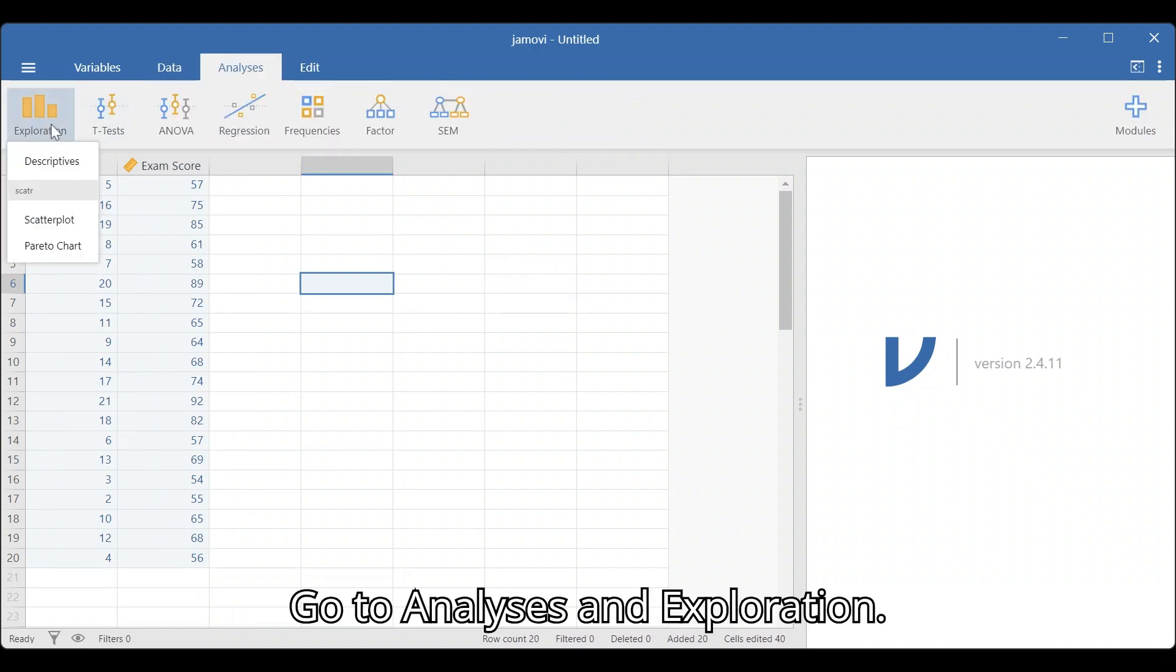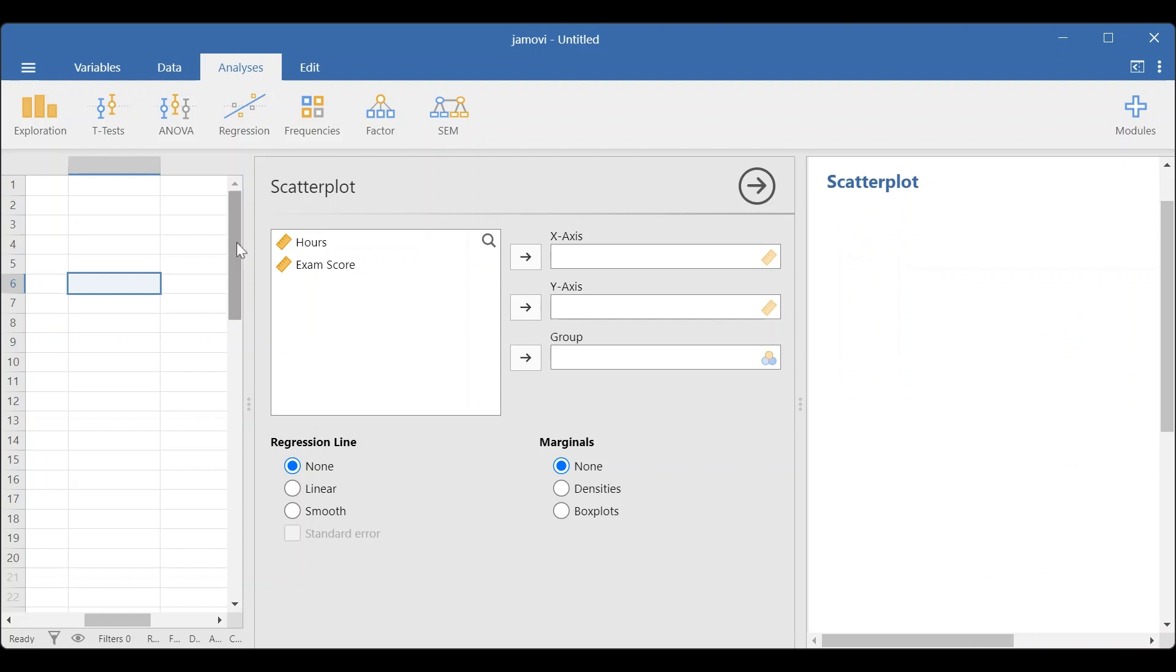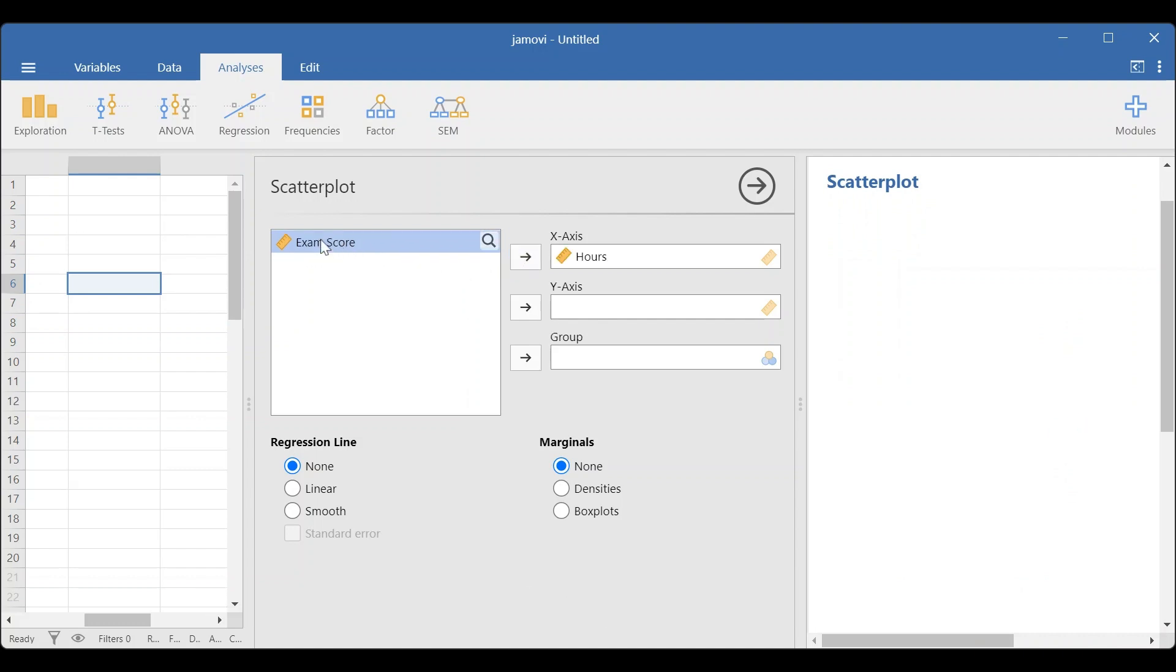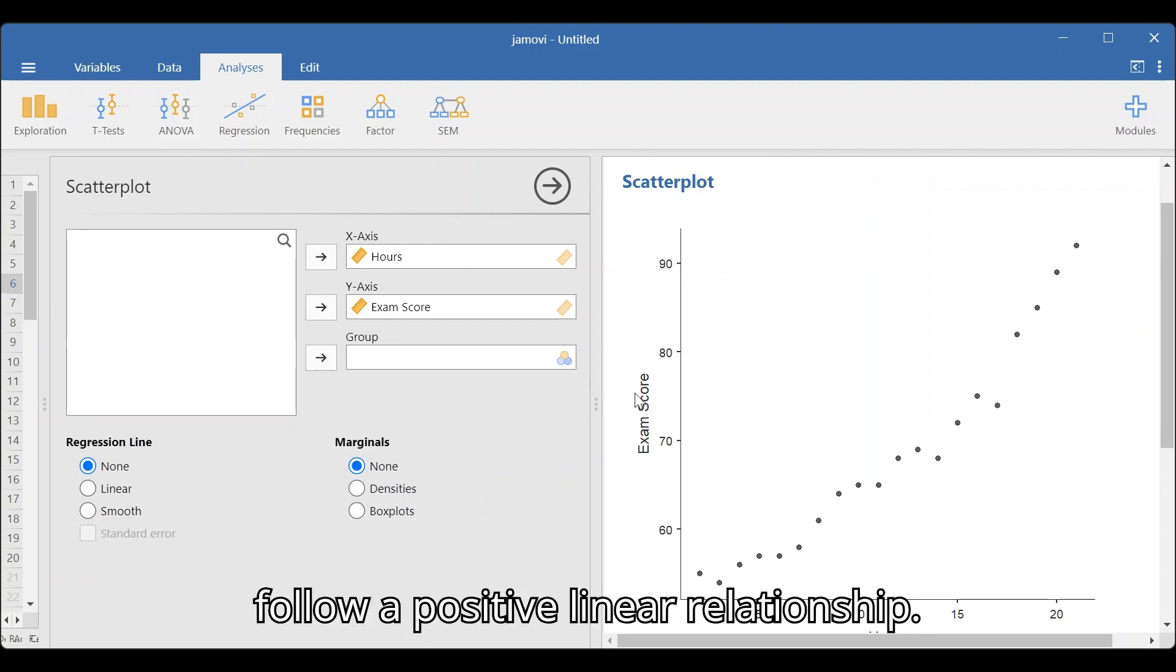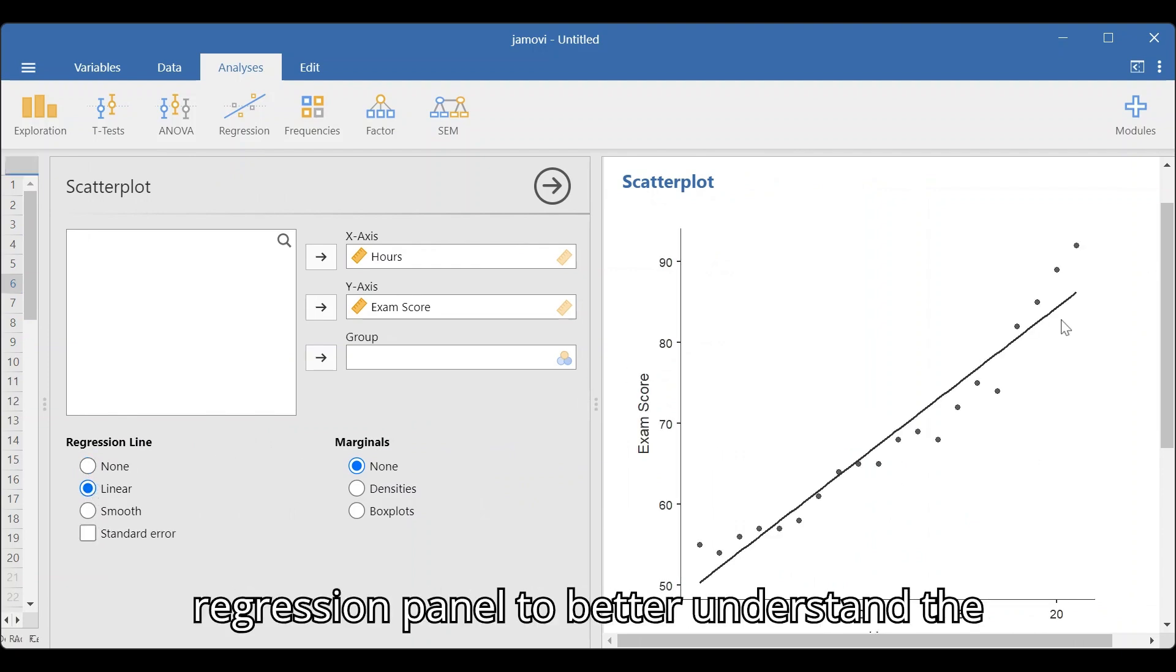Go to Analyses and Exploration. Select Scatterplot and wait for the option window. Move the independent variable in the x-axis, and the dependent variable in the y-axis. It can be seen in the scatterplot on the right that the two variables seem to follow a positive linear relationship. You can select the Linear option in the regression panel to better understand the figure.